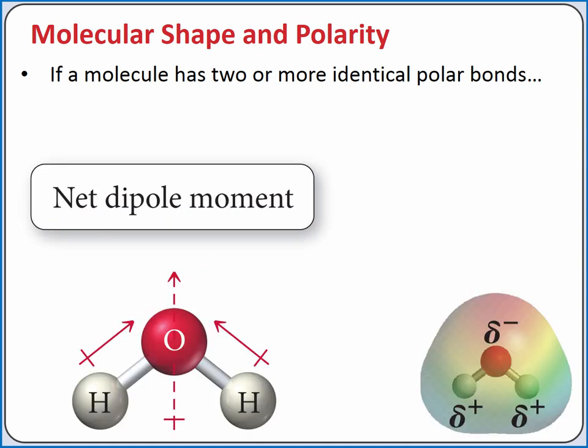Water also has two polar bonds, but water is a polar molecule. Since water has a bent molecular geometry, the two identical polar bonds cannot cancel each other out.